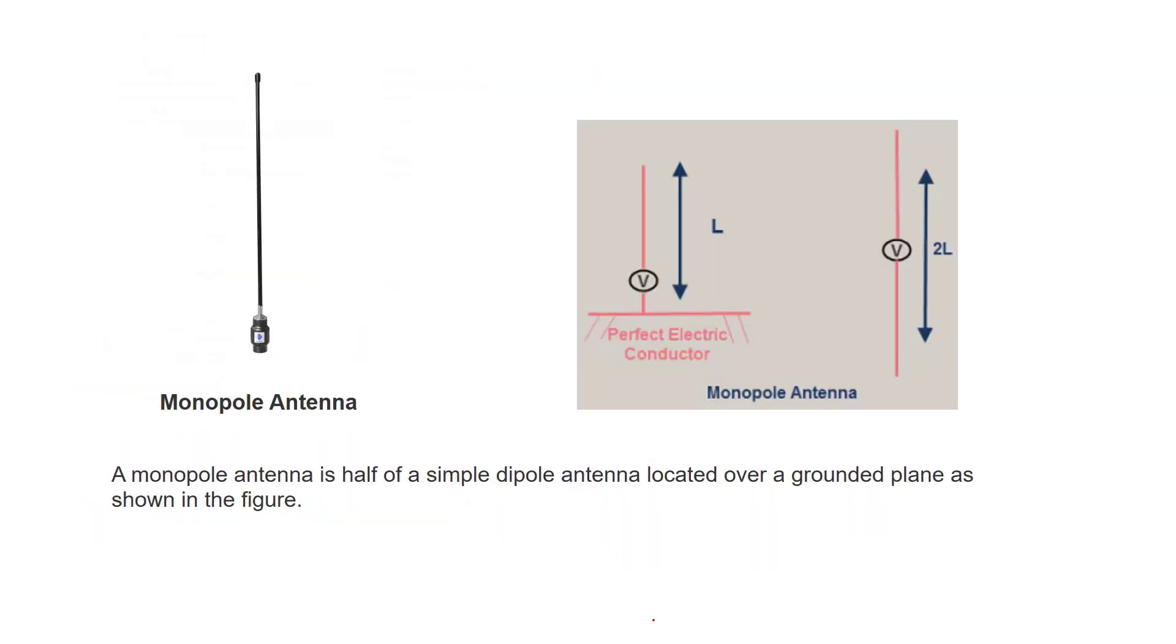We also have monopole antenna. It's a half of a simple dipole antenna located over a grounded plane as shown in the figure. This is a grounded plane. For example, you can see this on cars, it's a monopole antenna and it radiates like this. The source here should be a perfect electric conductor. This is the source and this is the antenna.